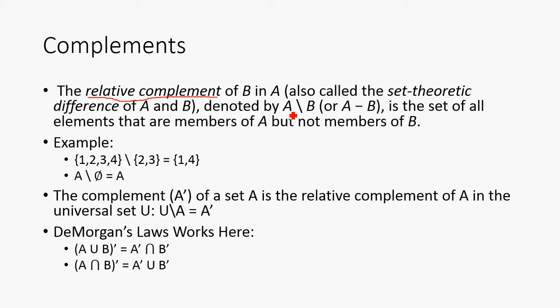So, next is the Cartesian product. A new set can be constructed by associating every element of one set with every element of another set. So, the Cartesian product of two sets A and B, Cartesian product, is denoted by A cross B, and is the set of all ordered pairs (a,b), such that a is a member of A and b is a member of B.